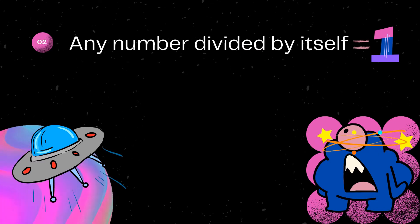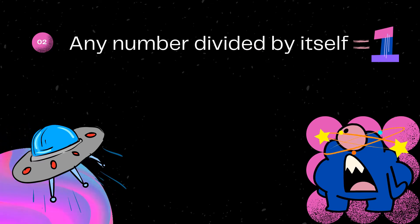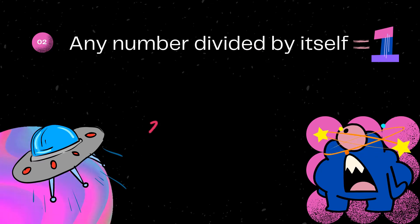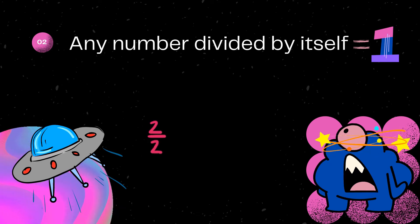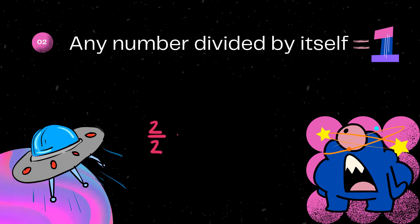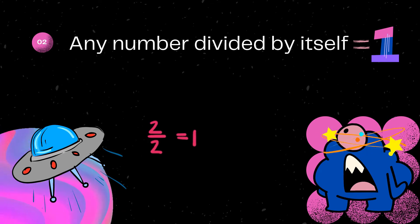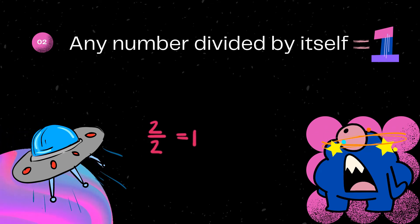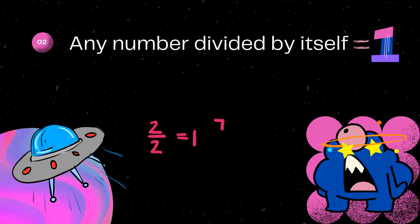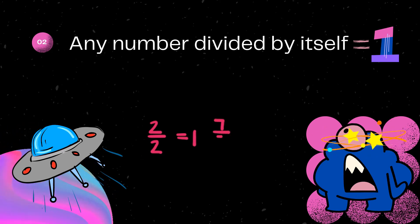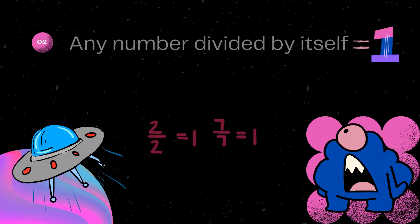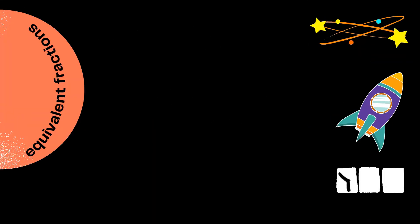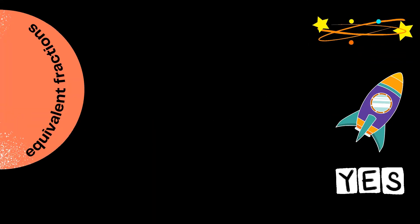Any number divided by itself is equal to one. When I take two and divide it by two, the answer is one. The same applies to all numbers — seven divided by seven is also one.